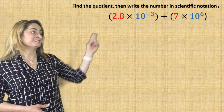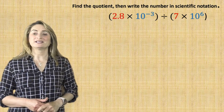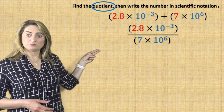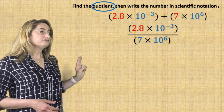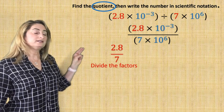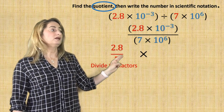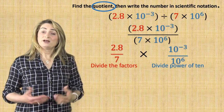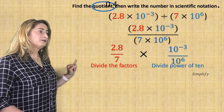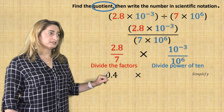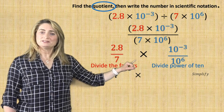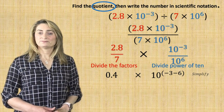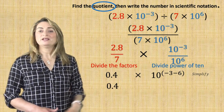Here's the second example for today's lesson. Find the quotient, then write the number in scientific notation. The word quotient means the answer of division, so you're dividing those two numbers. First of all, divide the factors, which is 2.8 divided by 7, and then work with the power of 10, which is 10 to the power of negative 3 divided by 10 to the power of 6. Now simplify: 2.8 divided by 7 is 0.4. If you are dividing powers with the same base, you subtract the exponents. So subtract negative 3 minus 6, giving 10 to the power of negative 3 minus 6.